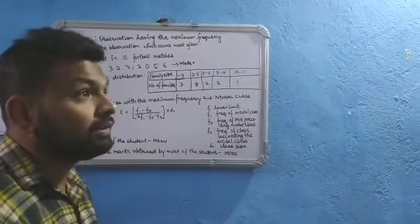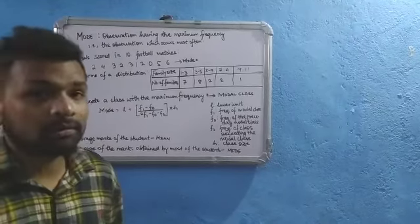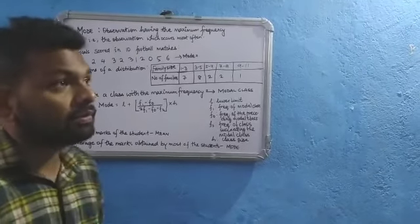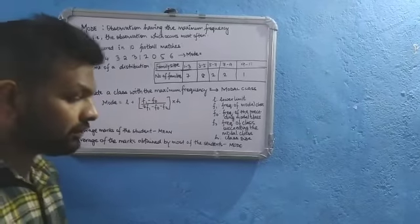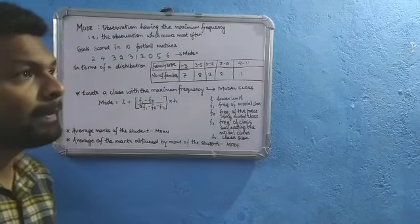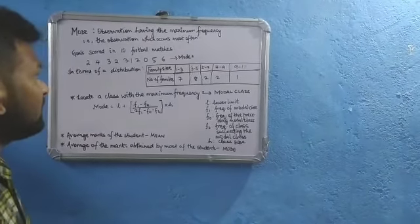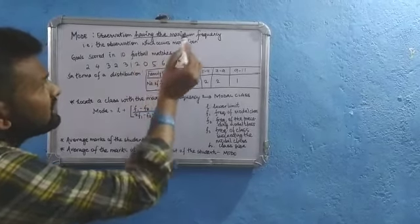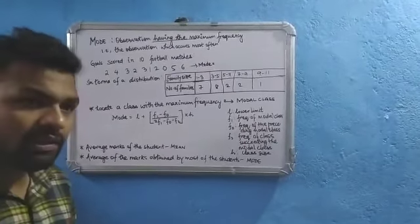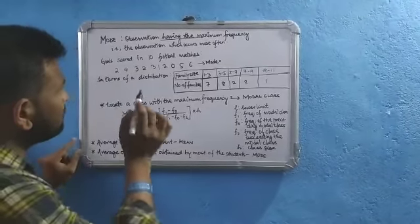Hello everyone. As we have already discussed about mean using all three methods, today our discussion is going to be about mode. Mode is the observation having the maximum frequency — in simple words, it is the observation that occurs the most number of times.